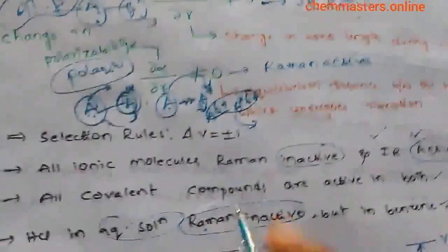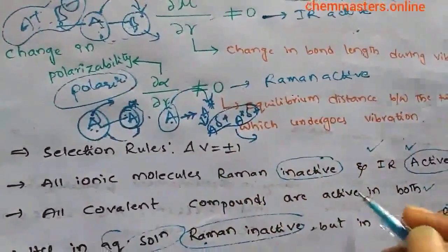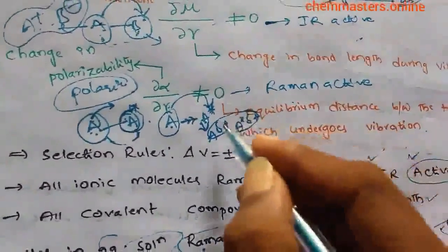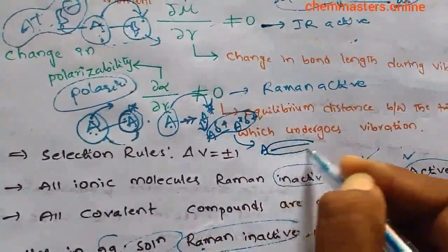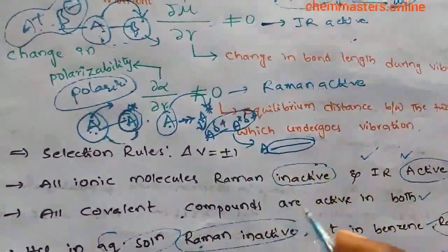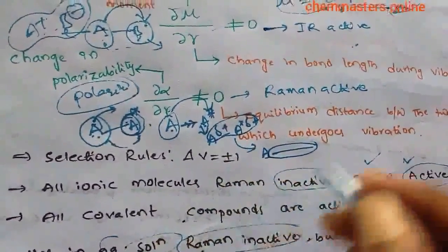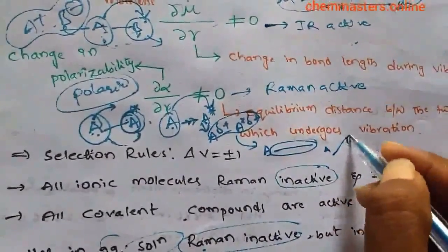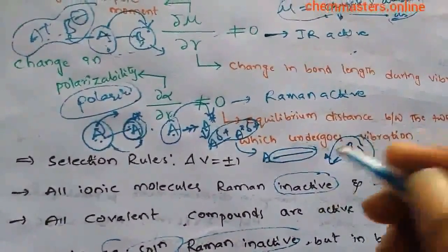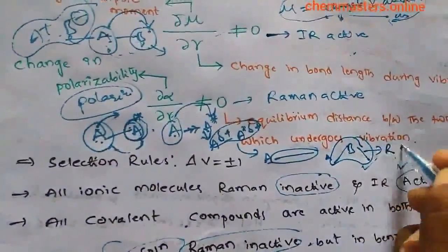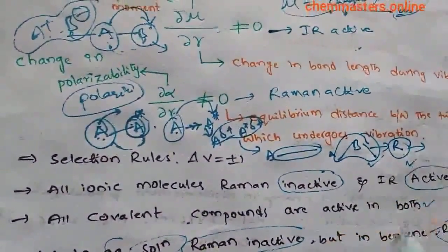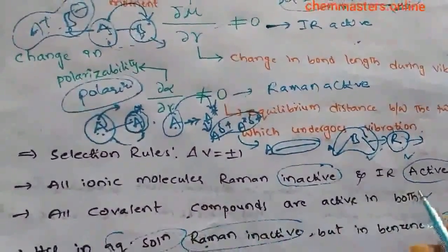In covalent compounds, polarization is possible, which is why they are both IR active and Raman active. Polarization changes based on bond distances, making covalent compounds Raman active. IR activity is possible in covalent compounds because asymmetric changes in the molecule can change the dipole moment when the geometry changes.